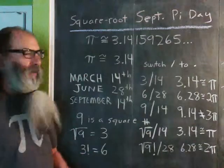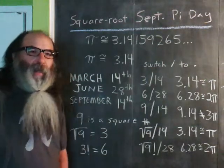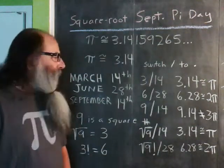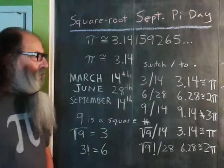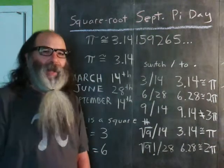And so, June 28th is considered 2 pi day, which is also known as tau day. And there's a group of people that believe tau day is more important or more relevant than pi day.